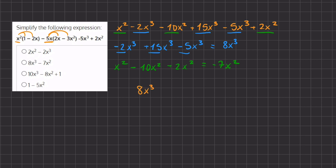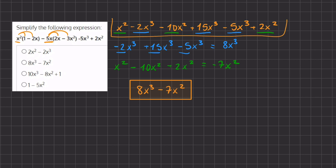So the simplified version of this expression is 8x to the power of 3 minus 7x to the power of 2, because we combined all of the like terms from our long expanded equation. Once we combined them, we were left with these two terms.